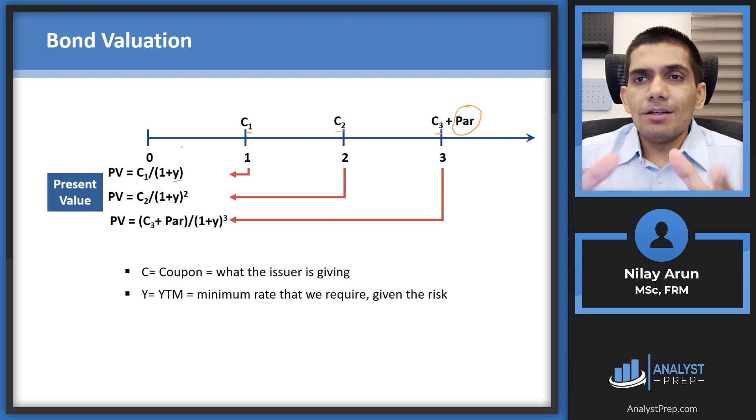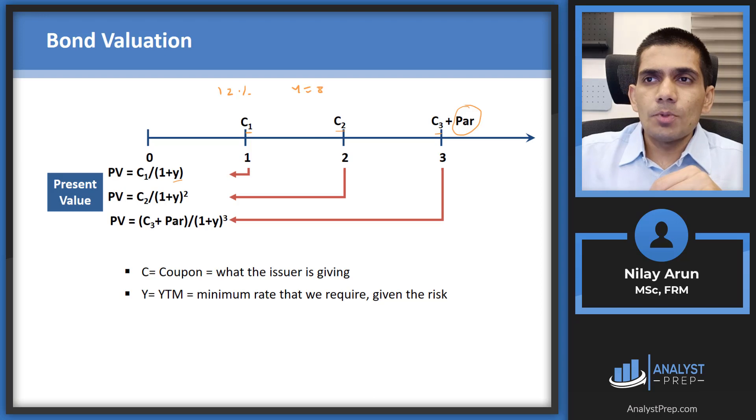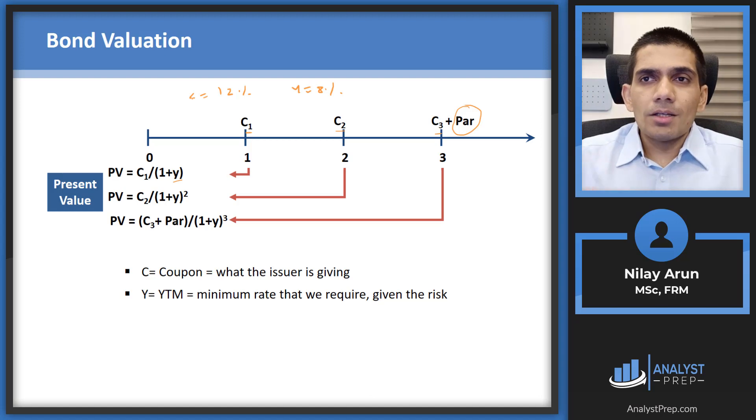Now to take a simple example, let's say the coupon is 12% and yield is 8%. Now that means that for the level of risk of a particular bond, my minimum rate of return was 8%. But the issuer, the company is actually ready to give me 12%, which means I would love to actually get this bond. But this would be the case for the other participants in the market as well, which means that this bond is not going to trade at the par value, which is supposedly at 100. It's going to trade at higher than that because it is giving more return than what you require.